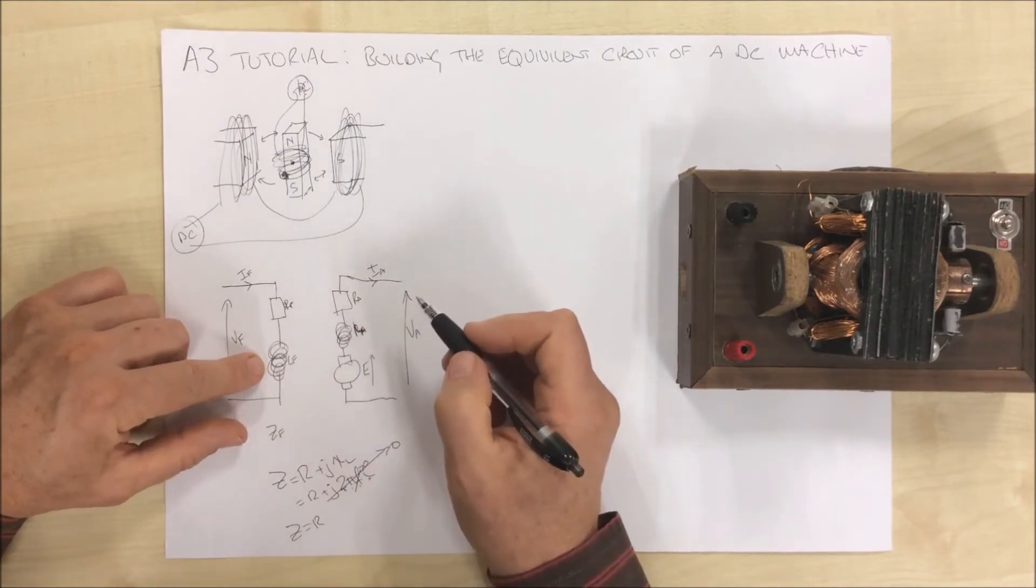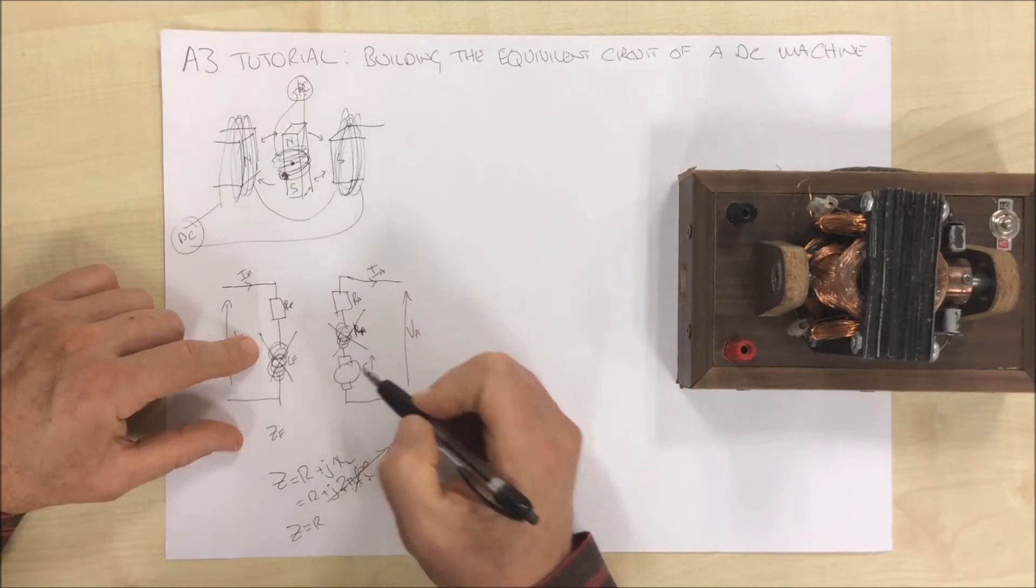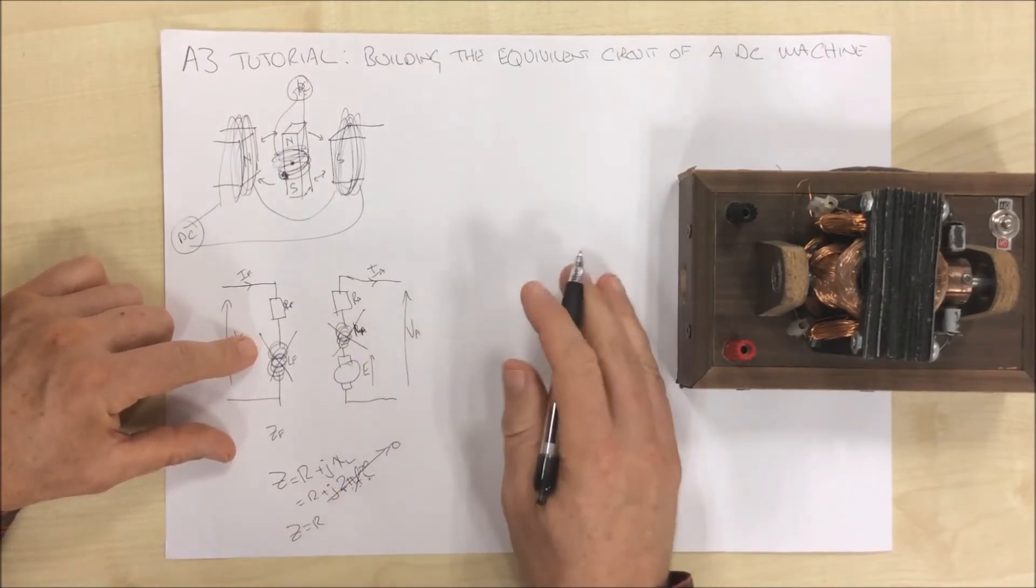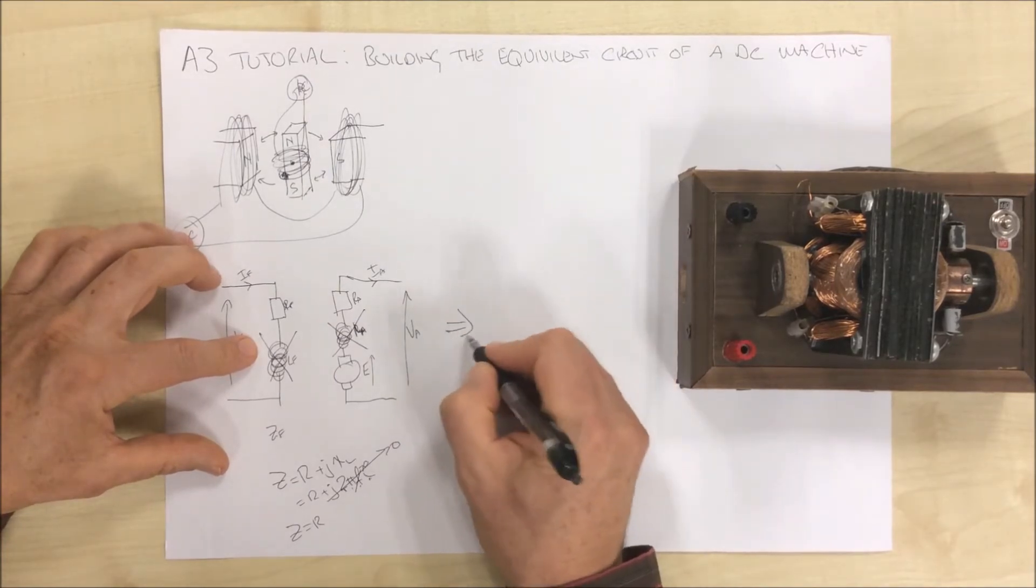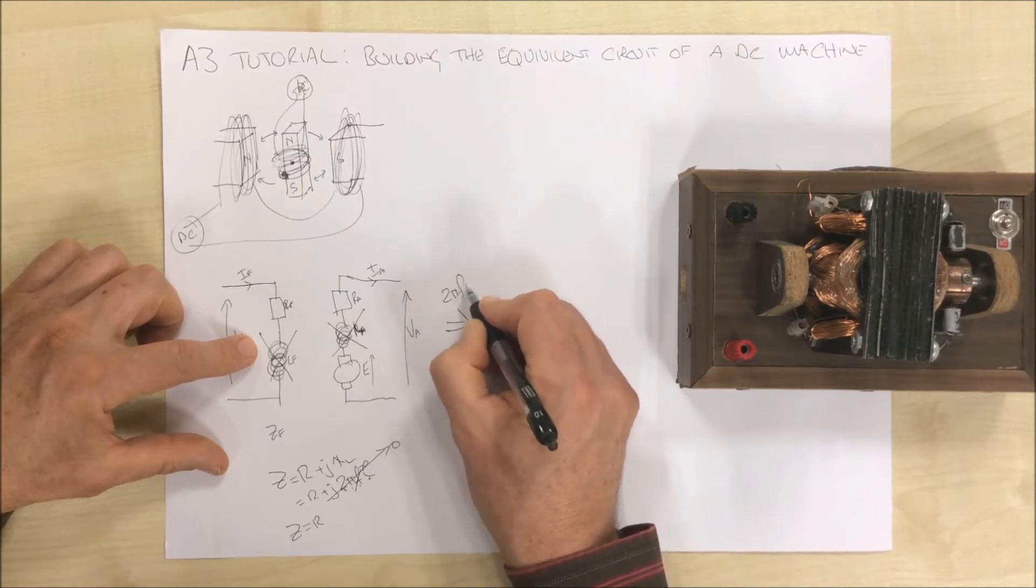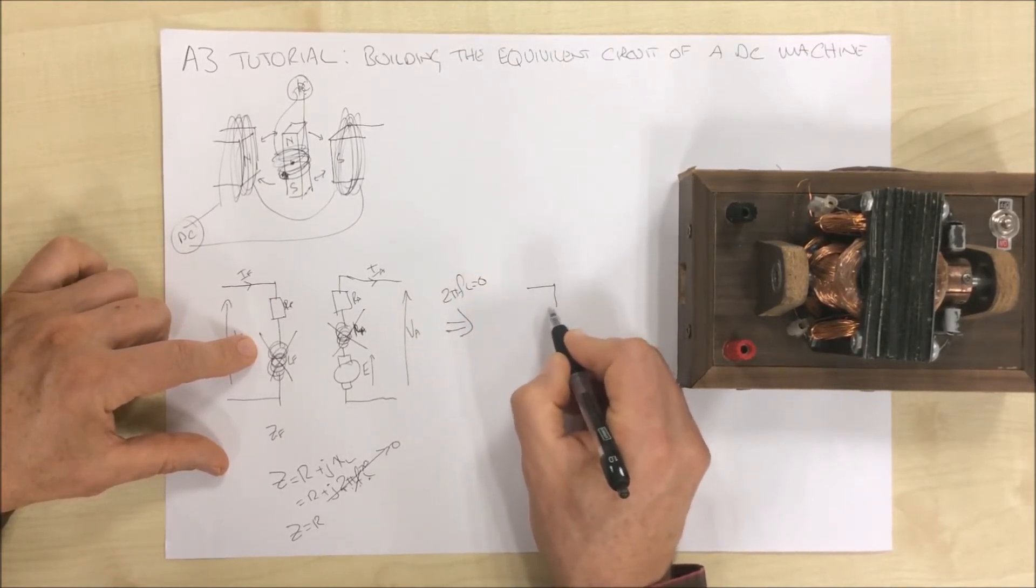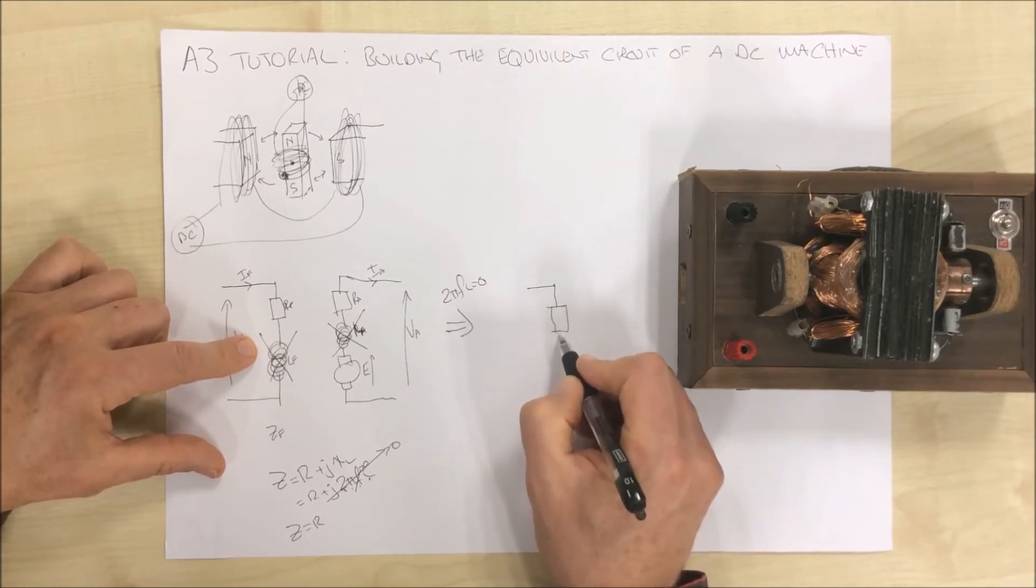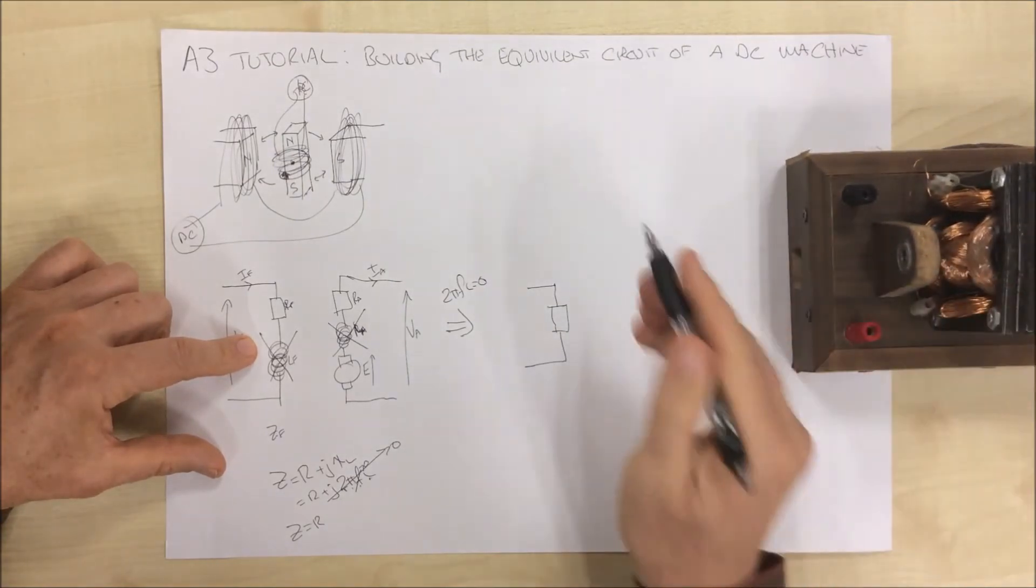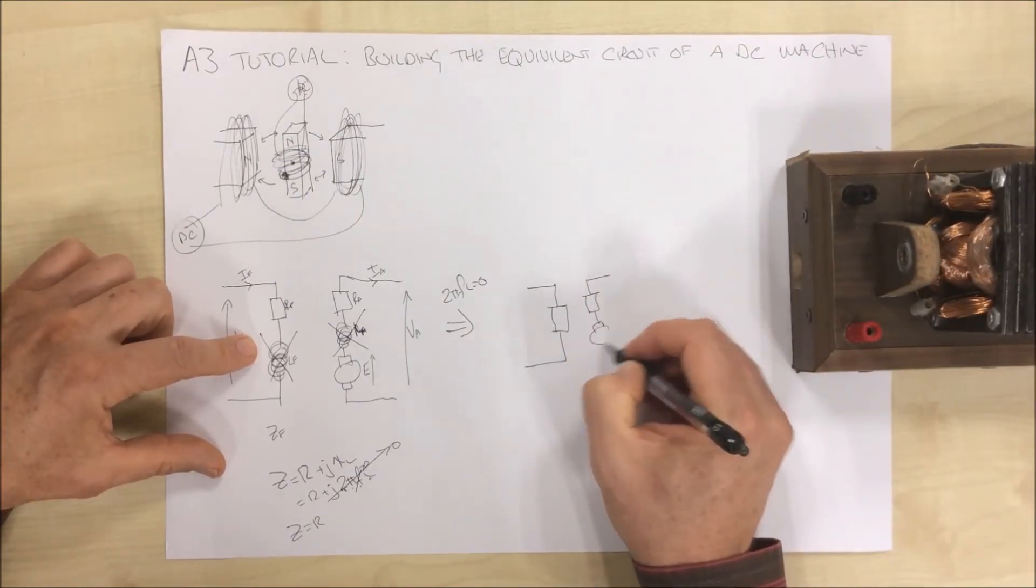So from understanding what's going on, we don't have to worry about our inductances. Our circuit resolves down to our field resistance and our armature resistance and the back EMF that we're generating.